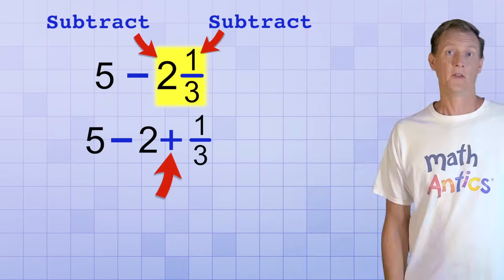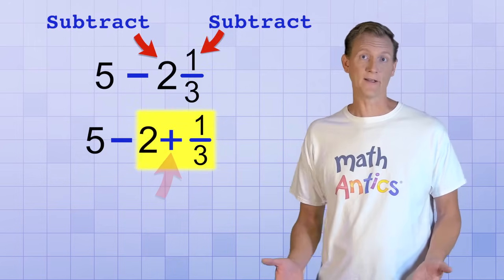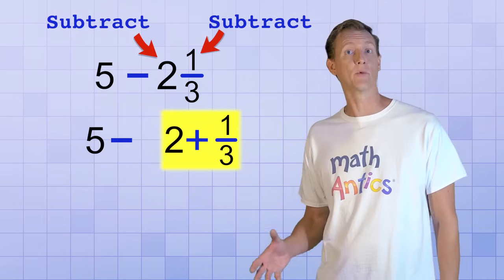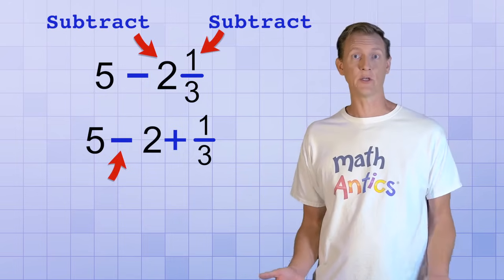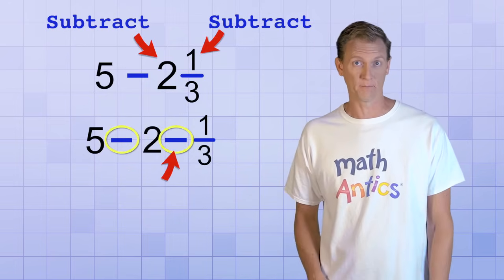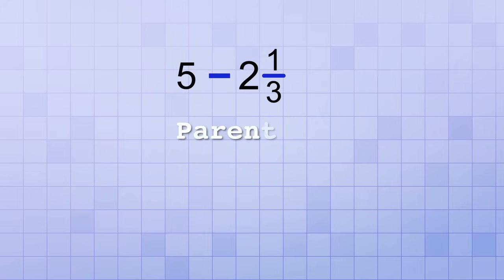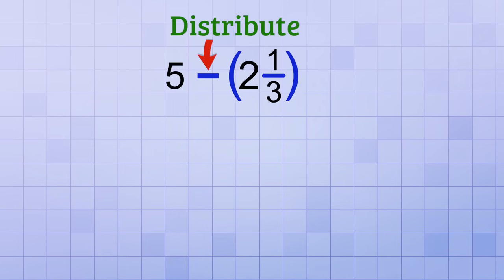That's because when we rewrote the mixed number as a sum of a whole number and a fraction, we forgot or we didn't realize that they form a group. We just put the 2 plus 1 third right after the minus sign and it made it look like we should subtract the 2 and add the 1 third. But we actually should have subtracted both of them. One way to avoid that mistake is to use parentheses around the mixed number you're subtracting so you remember that its parts form a group and you need to apply the minus sign to the whole group. And you can only get rid of the parentheses after you apply or distribute the subtraction to each member of the group, like this. Minus 2 minus 1 third.